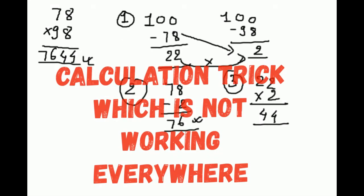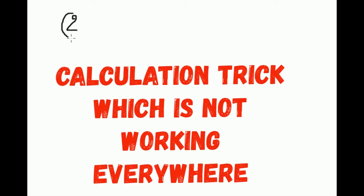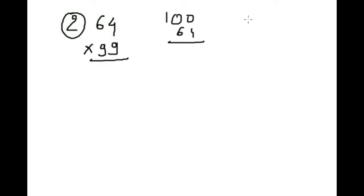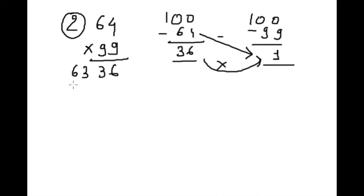Let's do it a little faster. Next example: 64 into 99. 100 minus 64 and 100 minus 99, this is 1 and this is 36. 63, subtract, multiply 36 into 1 equals 36. This is the answer. Next example, the highest two digit numbers: 99 into 99.